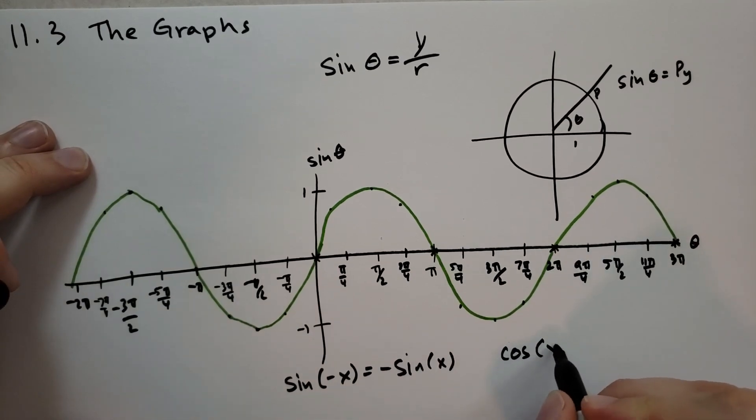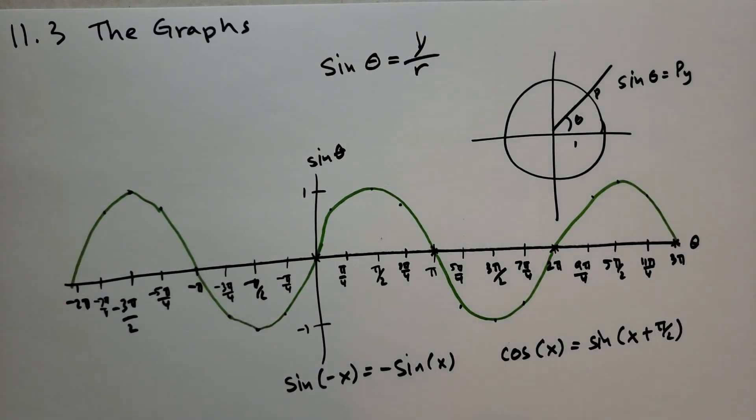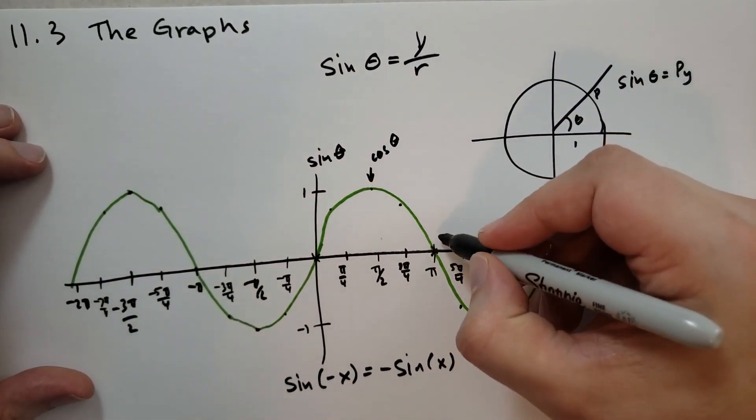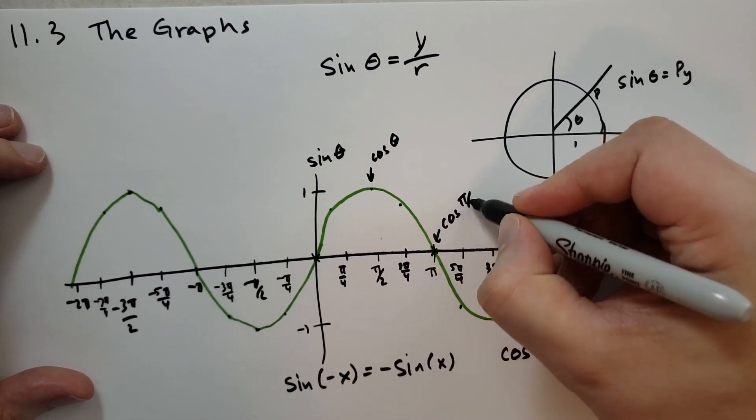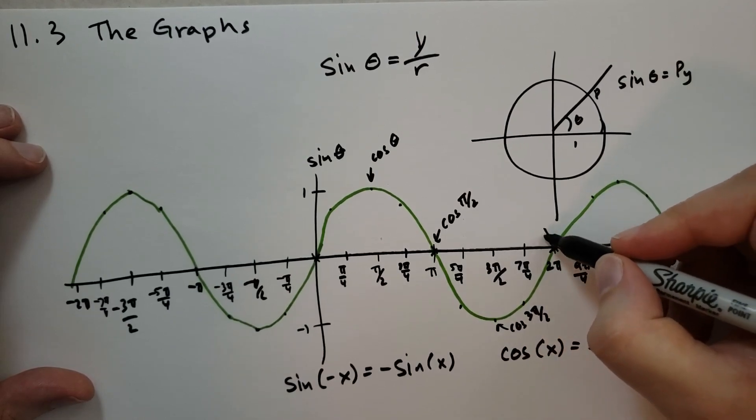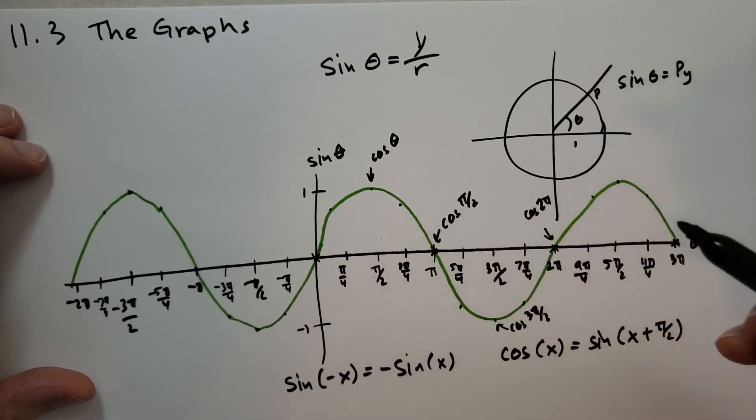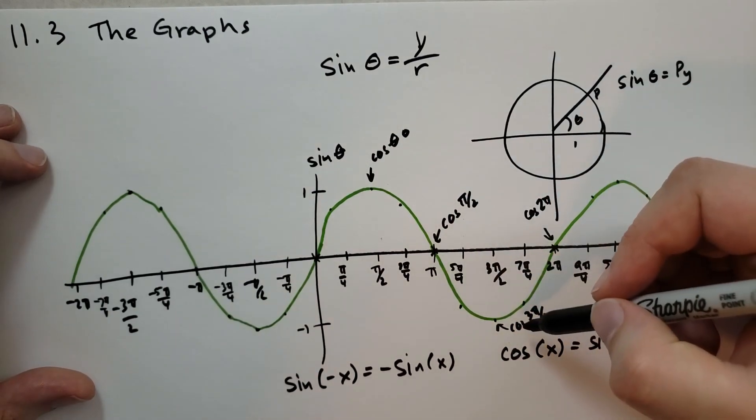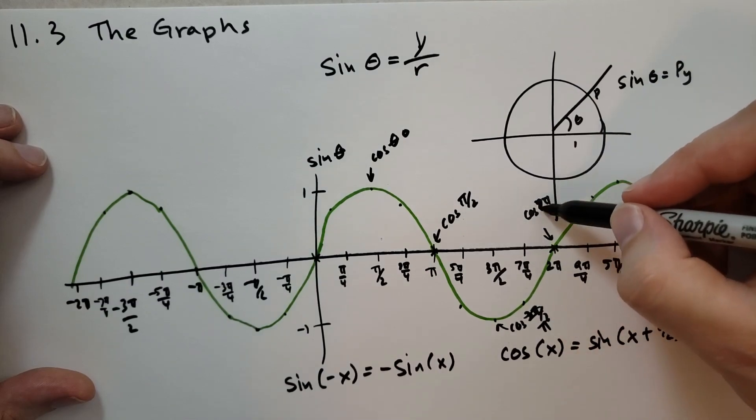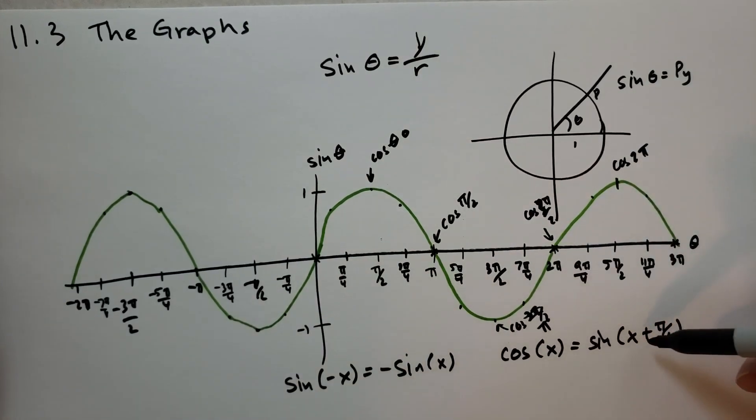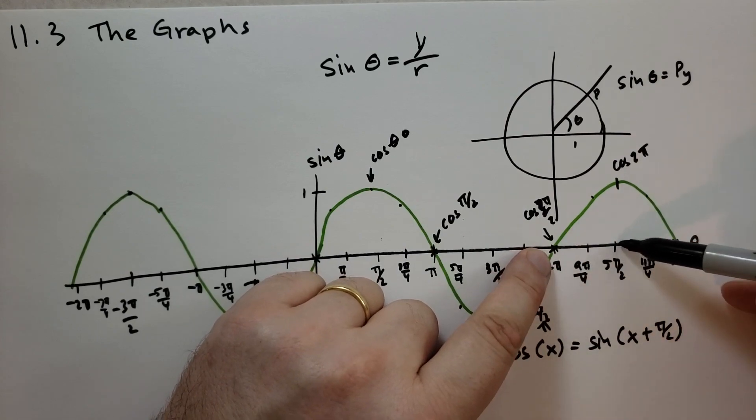And the other rule is cosine of x is the same as sine of x plus pi over 2. So cosine actually starts over here. This is cosine of 0. This is cosine of pi over 2. This is cosine of pi down here. This is cosine of 3 pi over 2. And this is cosine of 2 pi. Because we take the sine of that angle and then add pi over 2, and that gives us the cosine.